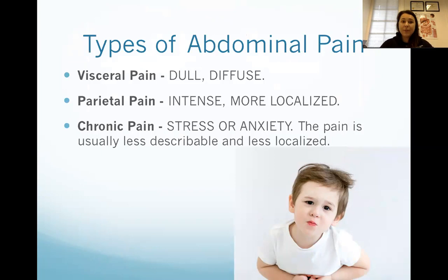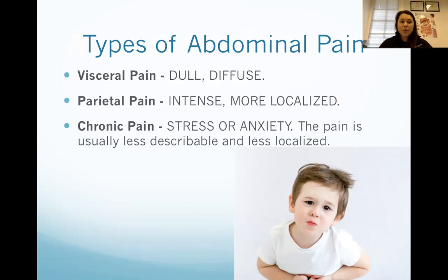There are three types of abdominal pain. Visceral pain is more dull and diffuse, involving organs, with a lower concentration of nerve endings — it can be more difficult to diagnose. Parietal pain is more intense and more localized, with a greater concentration of nerve endings; it can be stimulated by things as simple as inflammation — appendicitis would be an example of parietal pain, very intense right at the spot of the appendix. Chronic pain can be challenging as well, often caused by stress or anxiety in kids, and the pain is usually not in one spot but all over.